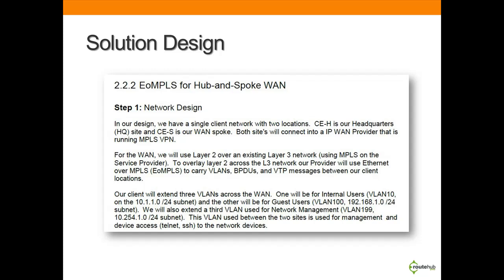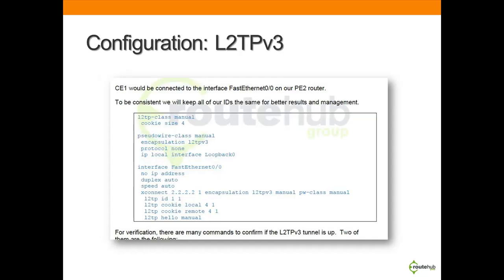In our workbook, we will discuss and describe the necessary design details for each Layer 2 VPN solution, including understanding the requirements involved, as shown in this particular screenshot for Ethernet over MPLS used for our hub-and-spoke WAN infrastructure. We provide step-by-step configuration for all solutions shown within this workbook. Here is a screenshot from the workbook showing one of the configuration steps for implementing L2TP version 3 on one of the PE routers.